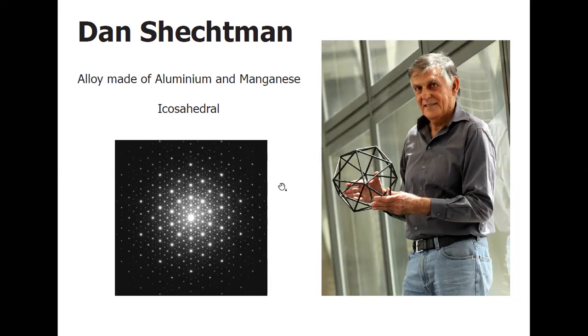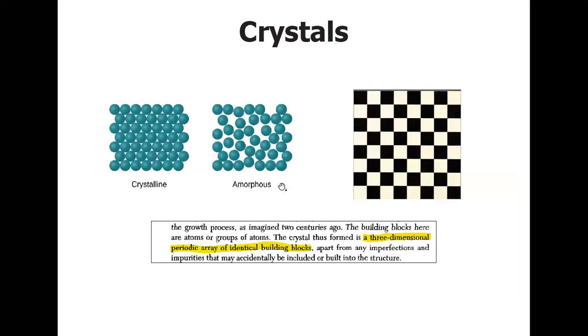To understand why that was the case, it is important that we revisit the definition of crystals and crystallinity. By the turn of the last century to its first half, the experts thought of crystallography to be a mature subject. With nothing more that can be discovered, they believed that all solids can be classified into two: crystalline and amorphous.